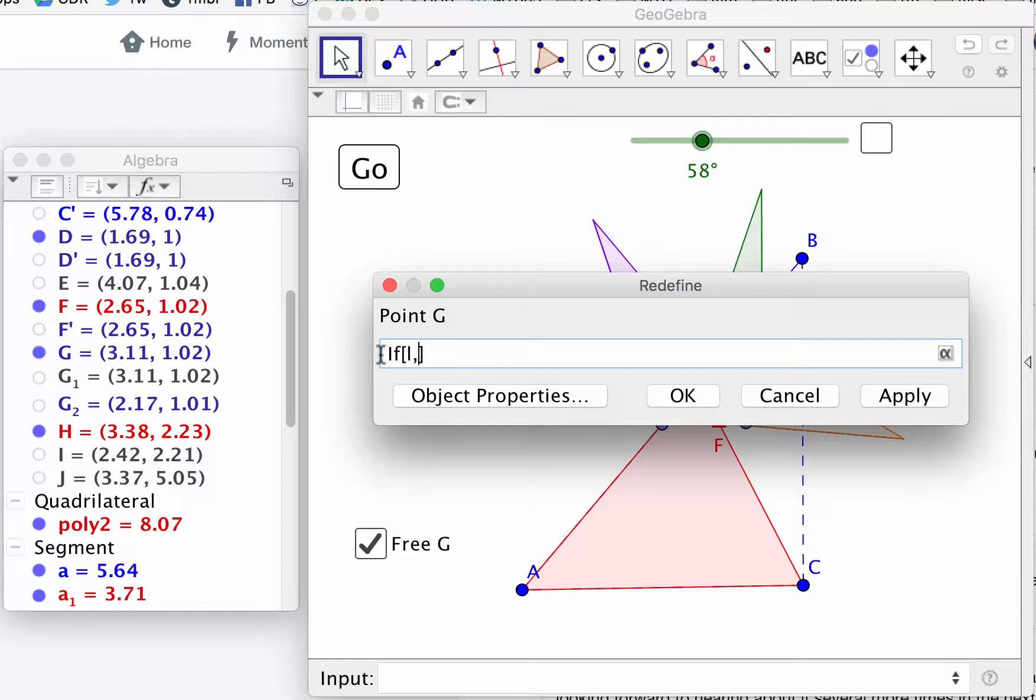And so I want to say if L, it's G2, and if not, or else, it's G1. And why I'm hesitating is I'm realizing that the point I want showing is actually G2, not G1. Okay, so let's see if that'll do that.